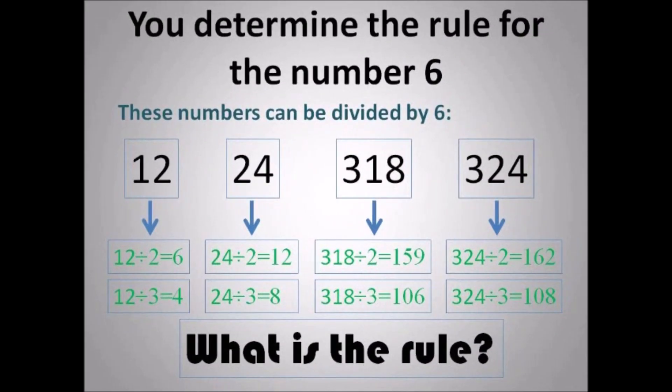You determine the rule for the number 6. I have 12 divided by 2, and then 12 divided by 3 — they can be divided by 2 and 3. 24 can be divided by 2 and 3. 318 can be divided by 2 and 3. 224 can be divided by 2 and 3. What is the rule? Why do I have those divisions at the bottom? That would explain the rule — so you just tell me what it is.